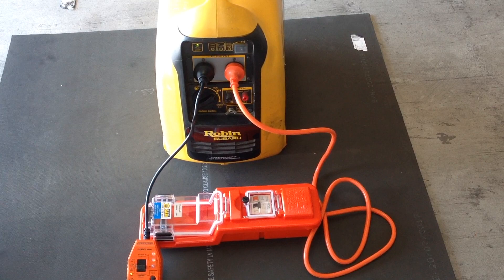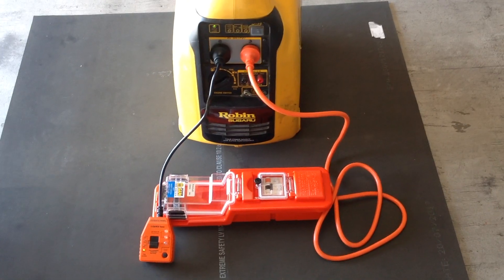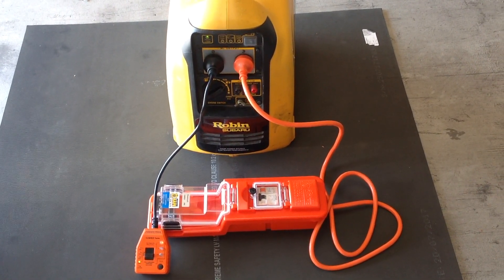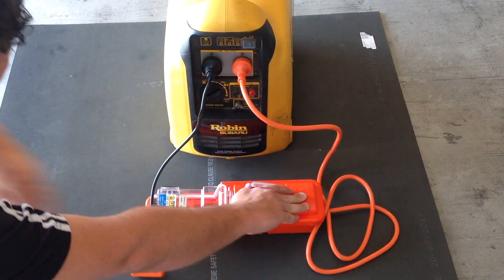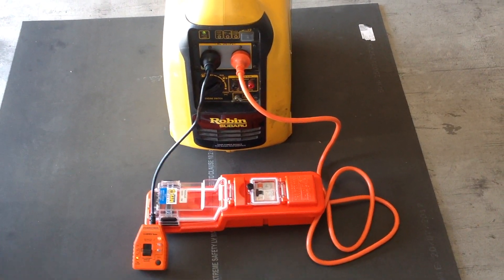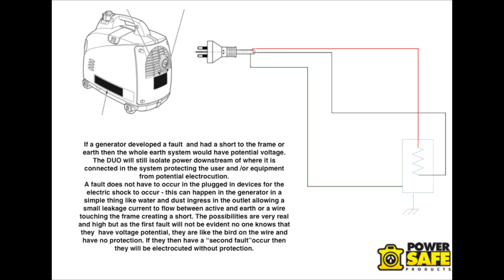In this situation, we have plugged our RCD tester into the generator and are creating the fault upstream of the DUO. This would simulate a fault in the generator, and this shows how the DUO would trip and isolate the circuit that the user has attached their appliances to, alerting them that there is a fault somewhere.